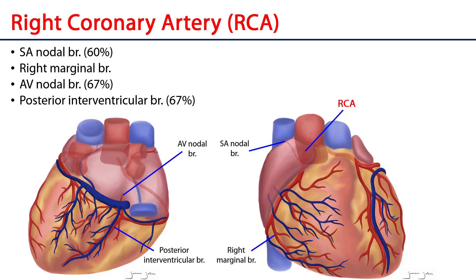Let's start our tour with the right coronary artery, hereby referred to as the RCA. It originates in the right coronary sinus, leaves the ascending aorta, and enters the coronary sulcus. Its first branch is the sinoatrial nodal branch, or SA nodal branch, supplying the SA node and portions of the right atrial wall. This is a branch of the RCA in about 6 out of every 10 individuals; in the remaining 4 out of 10 it is a branch of the left coronary artery.